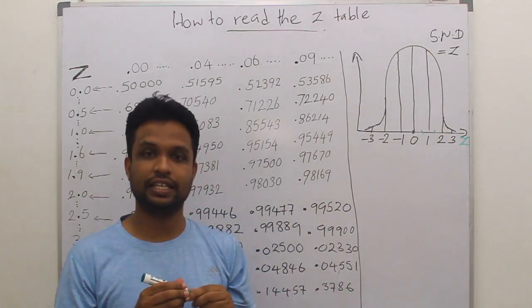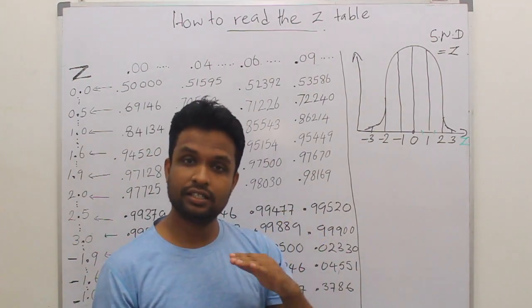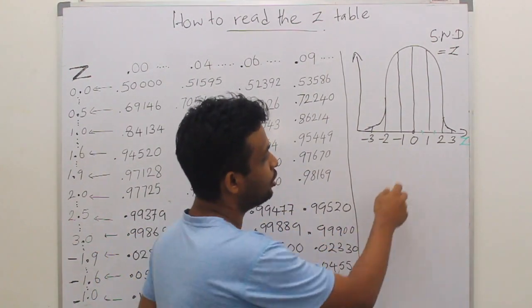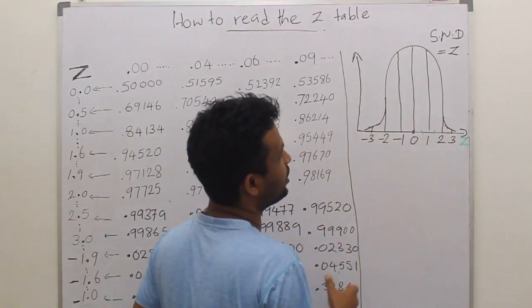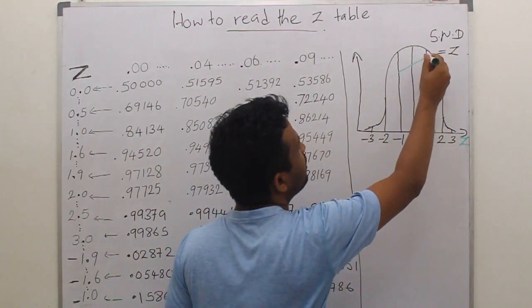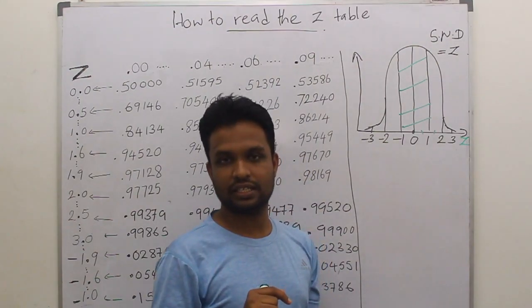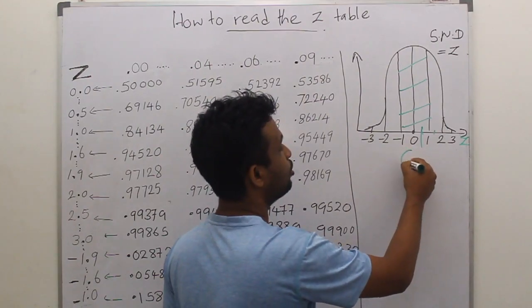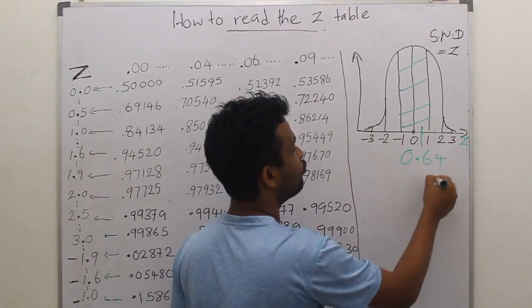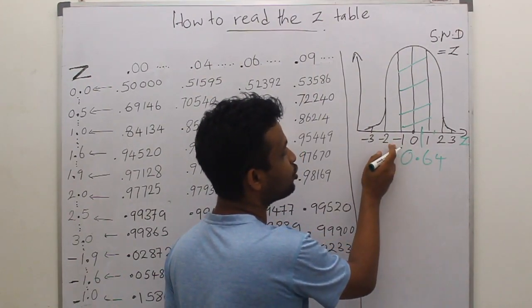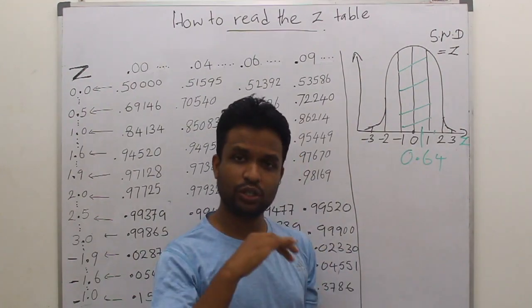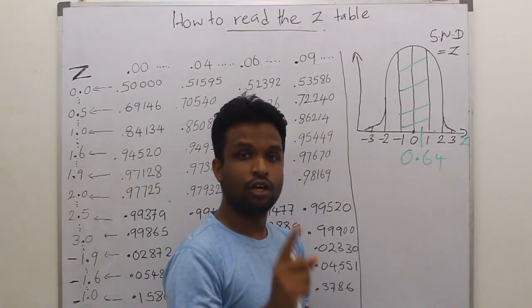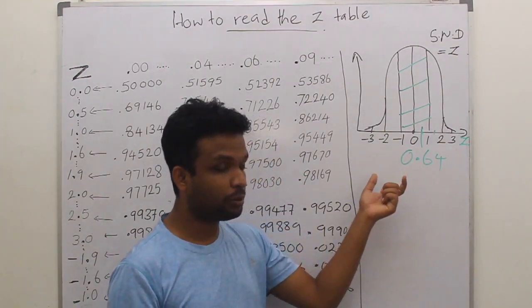In the previous lecture, I discussed that we can get the area under the curve. At known points, for example mean plus or minus 1 SD, we know that 68% is there. But if it is between something like minus 1 to 0.64, we don't know the exact probability at 0.64.